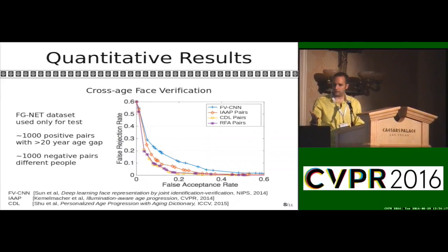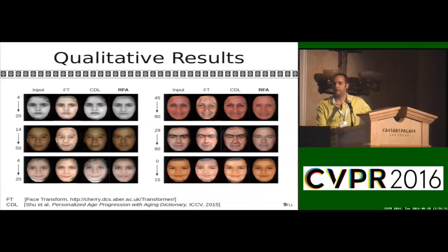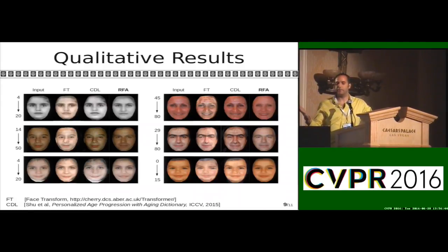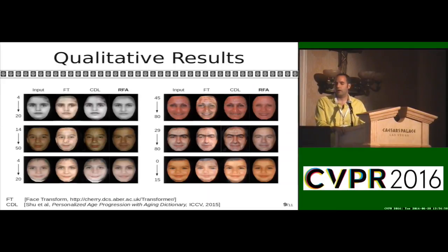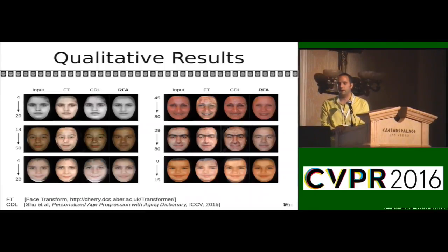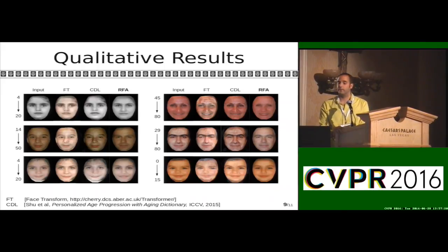One might ask: what is the advantage of the recurrent face aging method if it performs similarly to CDL on the curve? Here are six qualitative examples showing different aging processes with different input-output ages. On the left is the input face, then the face produced by face transform, then CDL, and finally our recurrent face aging method. The face transform and dictionary learning methods generate images with lots of texture but also many artifacts — sometimes too much texture. Our method produces a much smoother face and, at least in these examples, has no ghost artifacts.